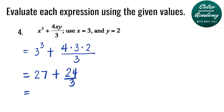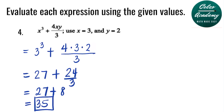Simplifying this, we have 27 plus 24 divided by 3, which is 8. That gives us 35. Another way to simplify 4 times 3 times 2 all over 3 is to divide 3 by 3, which equals 1. So you are left with 4 times 1 times 2, which is 8.